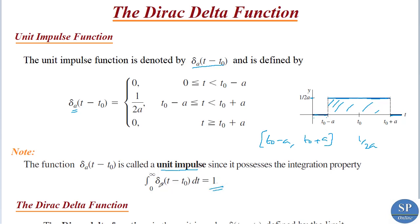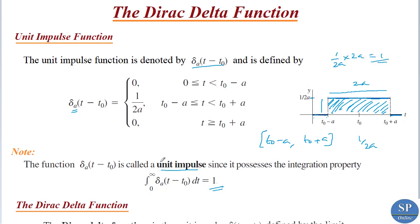If we integrate this function from 0 to infinity, we get the area under the curve over this region. This length is 1/(2a) and this length is 2a, because the distance from t₀ − a to t₀ + a is 2a. So the area is 1/(2a) × 2a = 1, which is why it is called the unit impulse function.